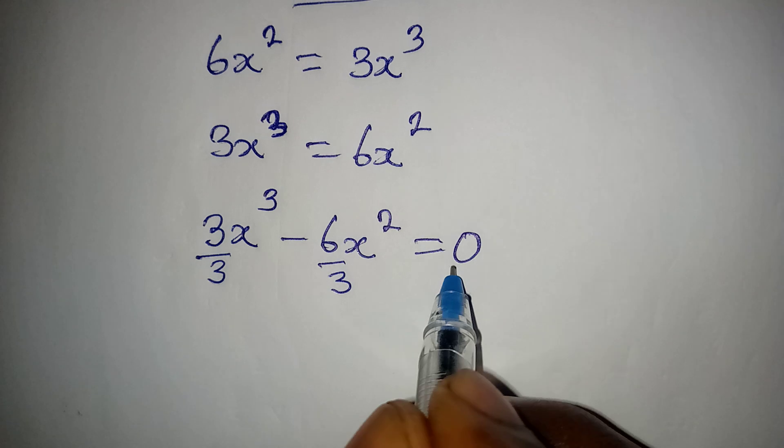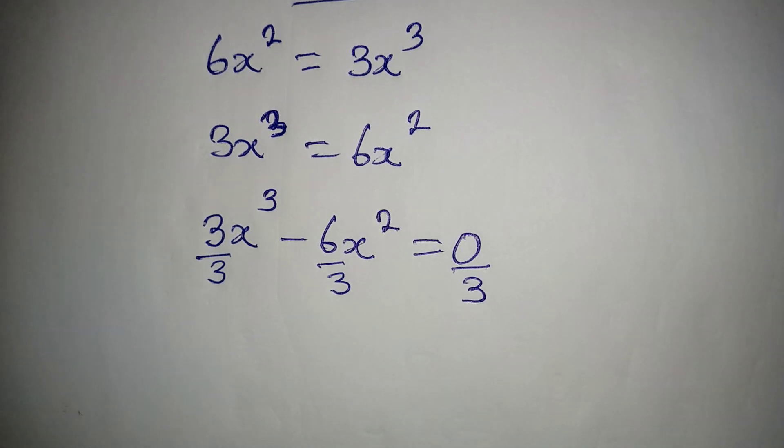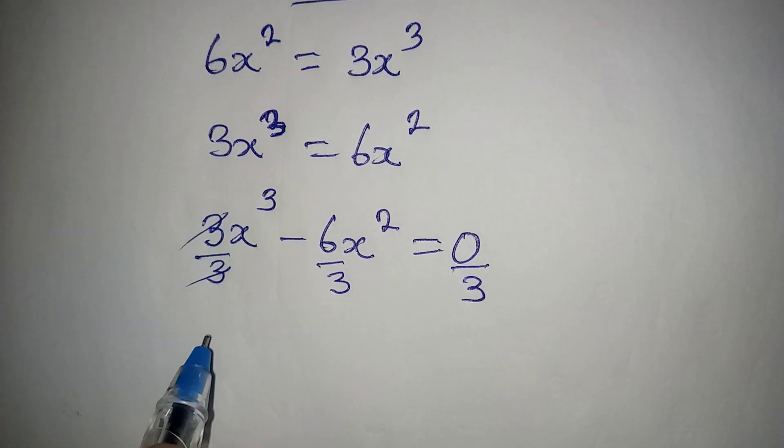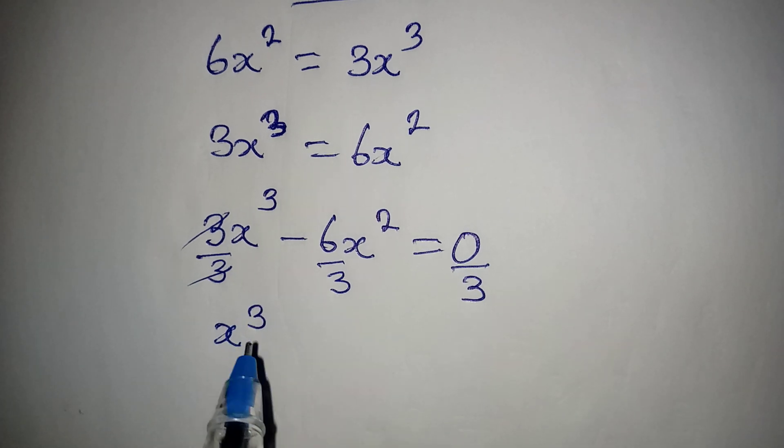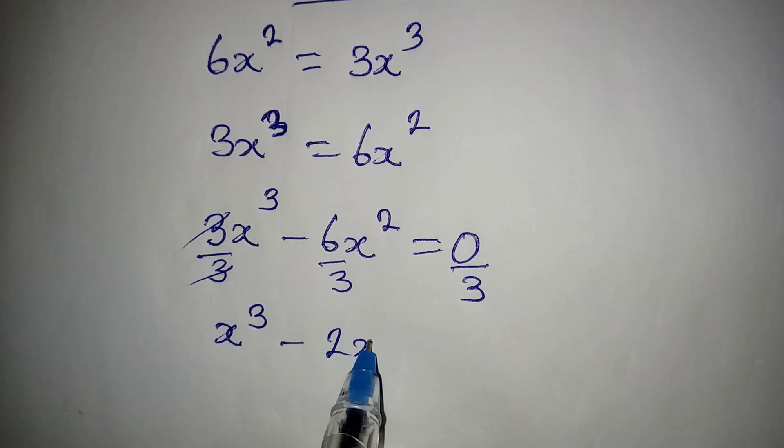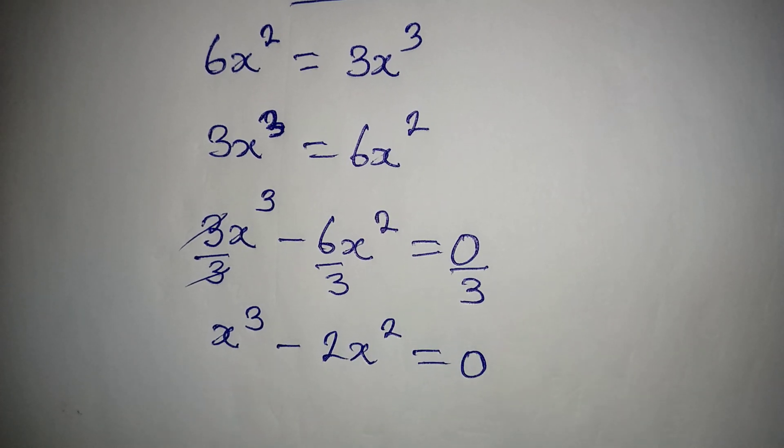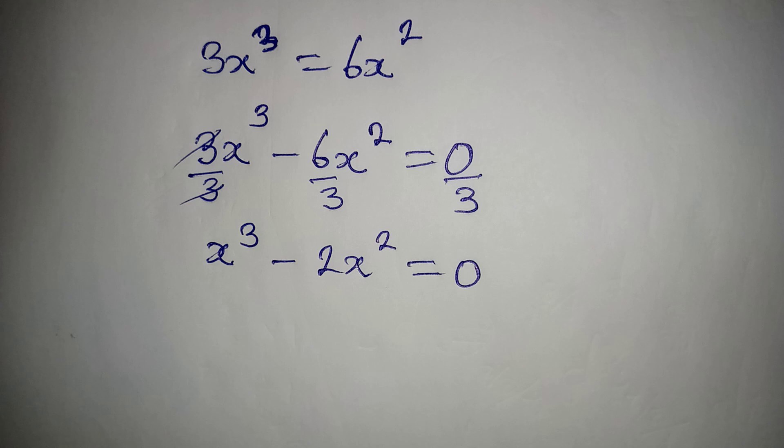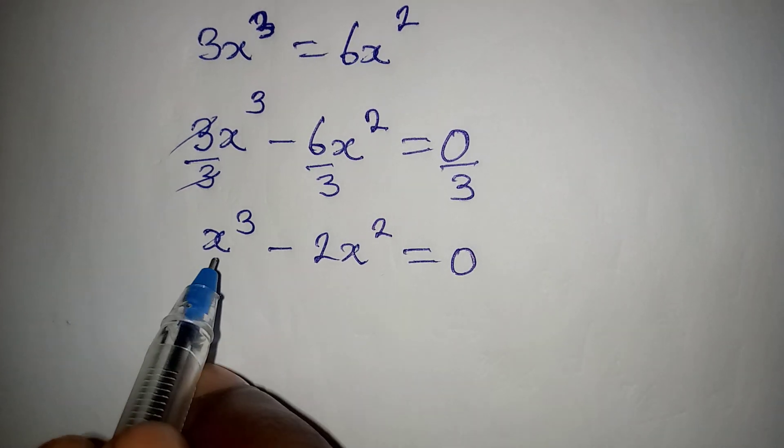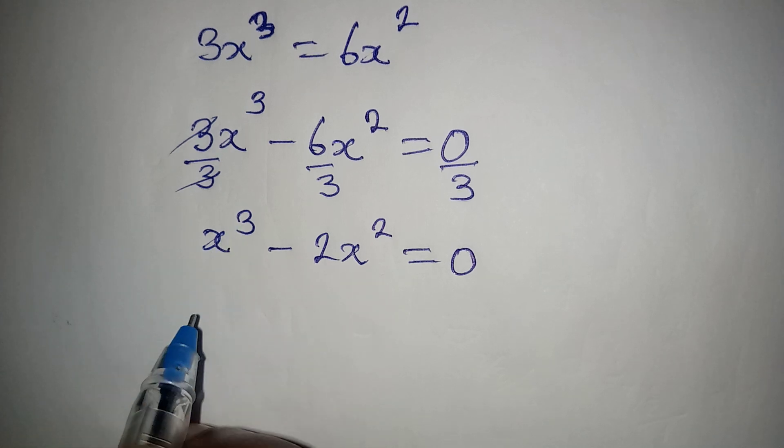So that we reduce the equation. This will give us x to the power of 3 minus 2x to the power of 2 equals 0. Now from here we can apply factorization because x to the power of 2 is common.